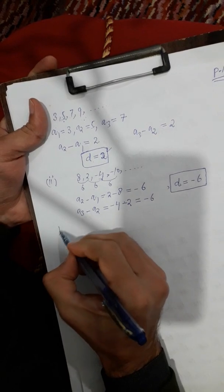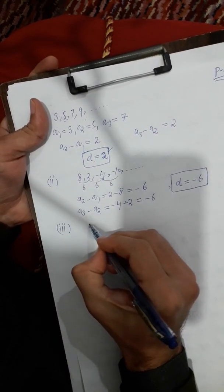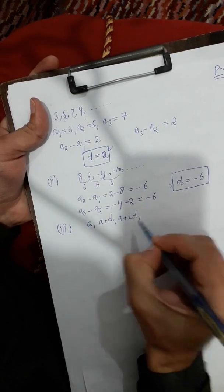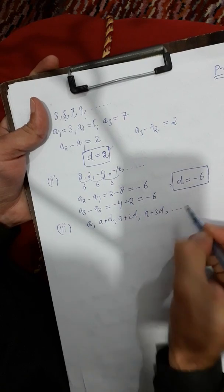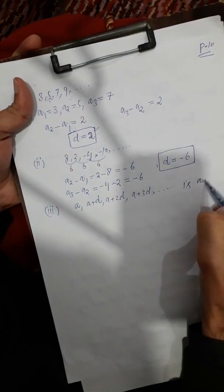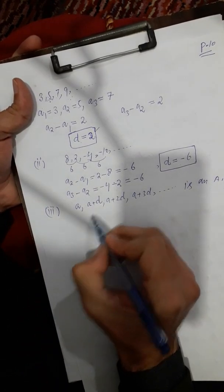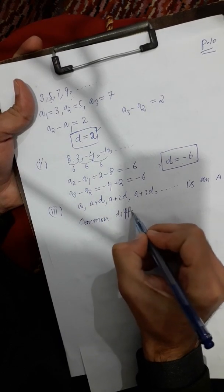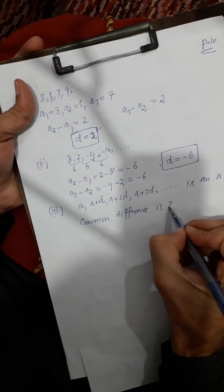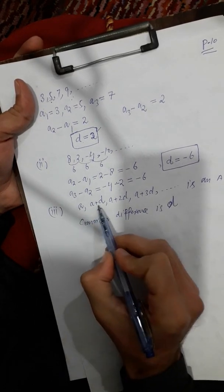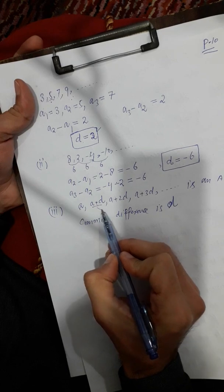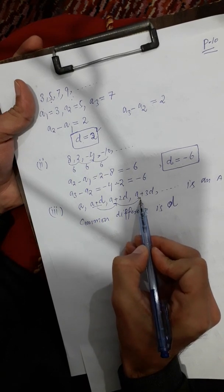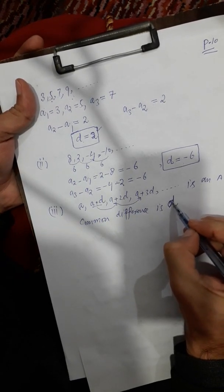In general, an arithmetic progression is written as: a, a+d, a+2d, a+3d, and so on. This is arithmetic progression, and the common difference d is constant. The second term is a+d, and so on.